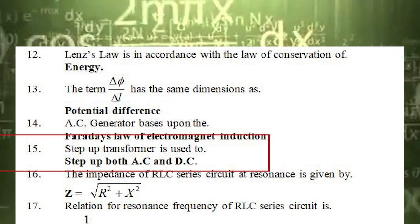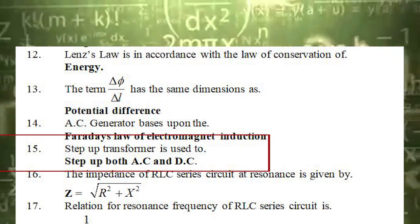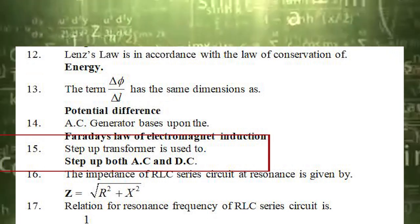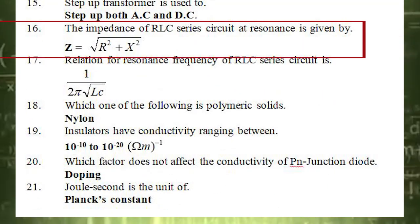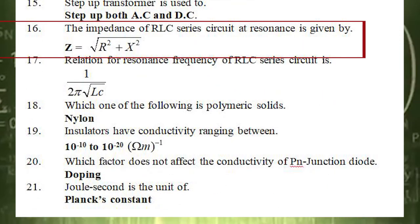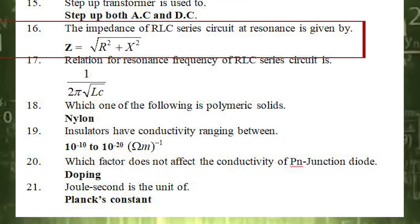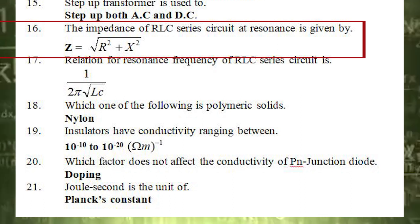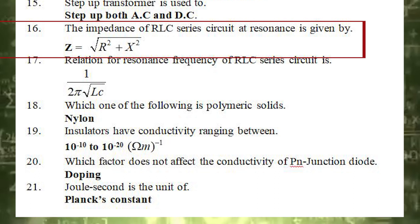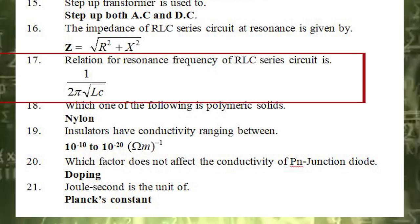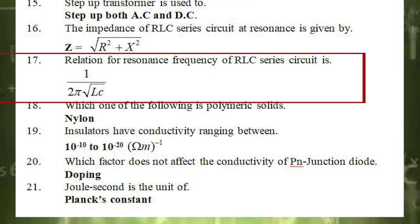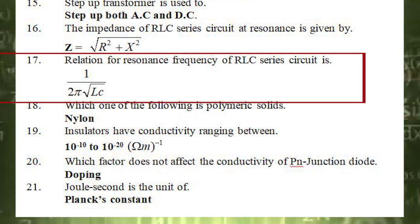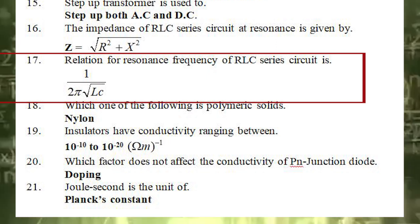The 15th statement is: a step-up transformer is used to. The correct answer is step up both AC and DC. The 16th statement is: the impedance of an RLC series circuit at resonance is given by. The correct answer is Z equals the square root of R squared plus X squared. The 17th statement is: the relation for resonance frequency of an RLC series circuit is. The correct answer is 1 divided by 2 pi times the square root of LC.